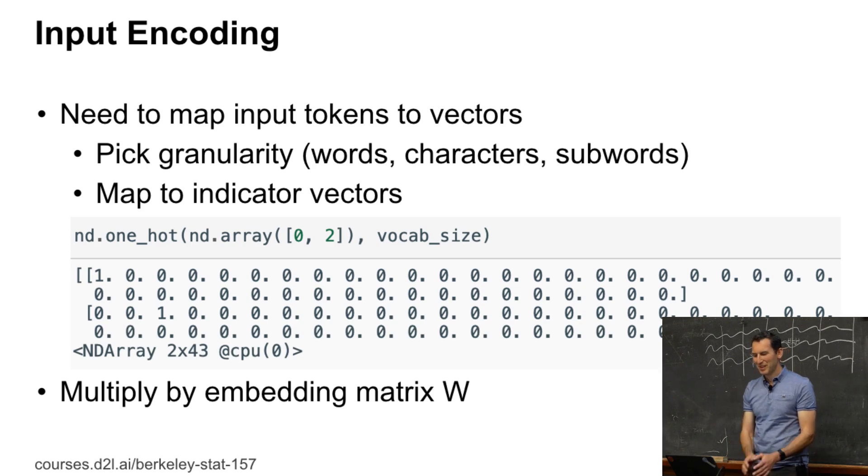So, remember what you basically have is we encode the input. We basically pick some granularity of words, characters, or subwords, and then we map those to indicator vectors. This was exactly the one-hot encoding before, and then you might go and multiply by an embedding matrix or you might just feed it directly into LSTM or RNN or GRU whatever.